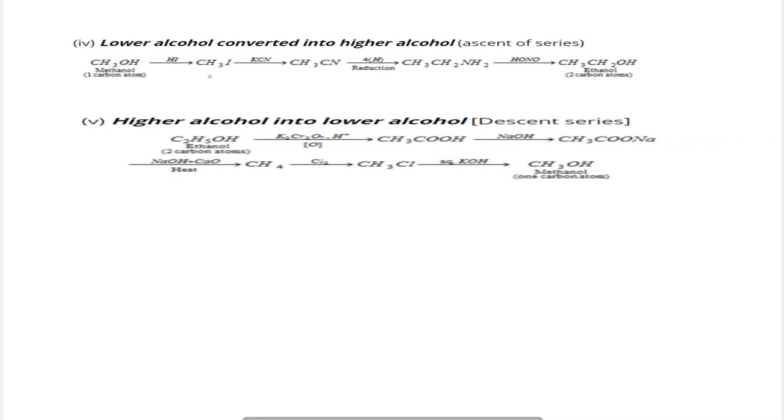Next is the conversion of lower alcohols to higher alcohols, called ascent of series. Taking methanol as an example: methanol is reacted with hydroiodic acid to form CH3I, then CH3I is treated with potassium cyanide KCN to form methyl cyanide. Methyl cyanide is then reduced to ethylamine. Ethylamine is treated with nitrous acid to form ethanol — a higher alcohol.